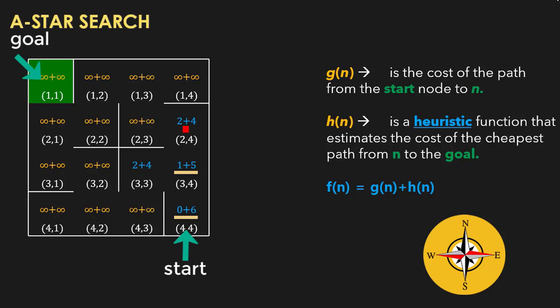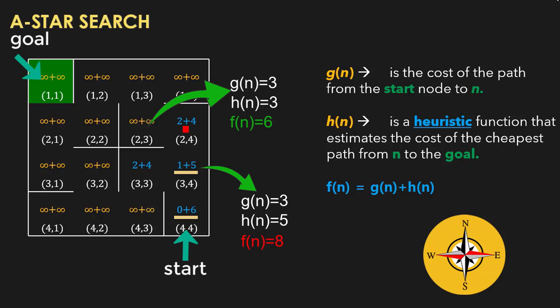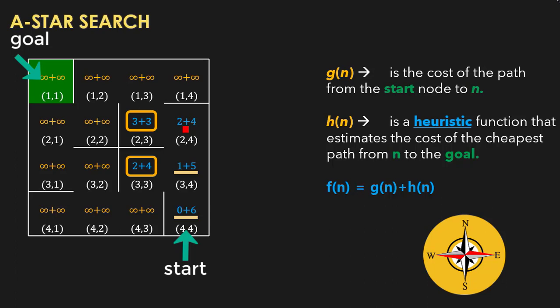Now we repeat the process. Cell 2,4 has two neighbors. After computing their updated costs, cell 3,4 gets a higher cost than its current value so it is not updated, but cell 2,3 gets a better cost and is updated. We search for the minimum cost cell among unexplored cells. Two cells have minimum cost 6, but cell 2,3 has a lower heuristic cost, so we select it.